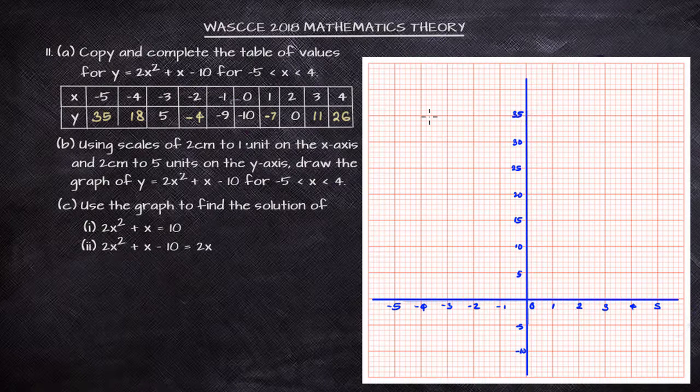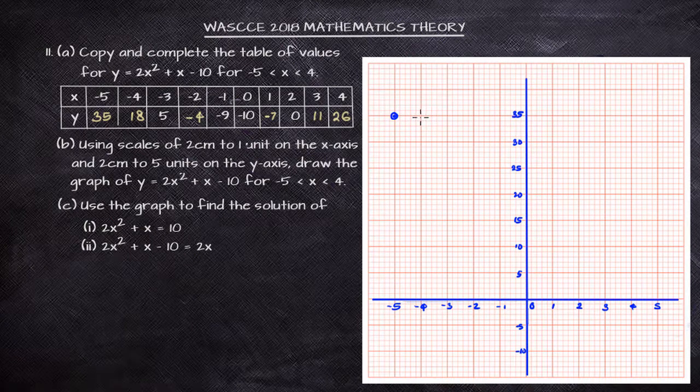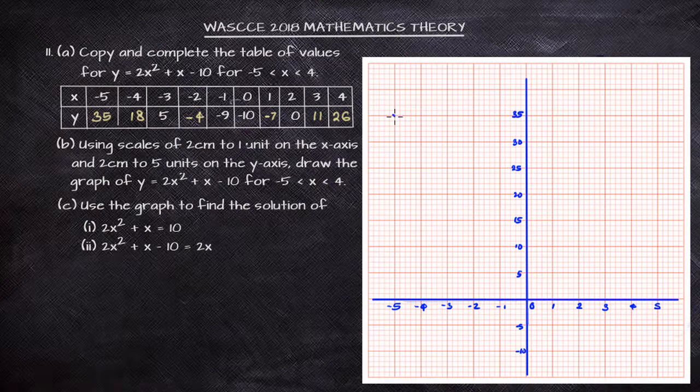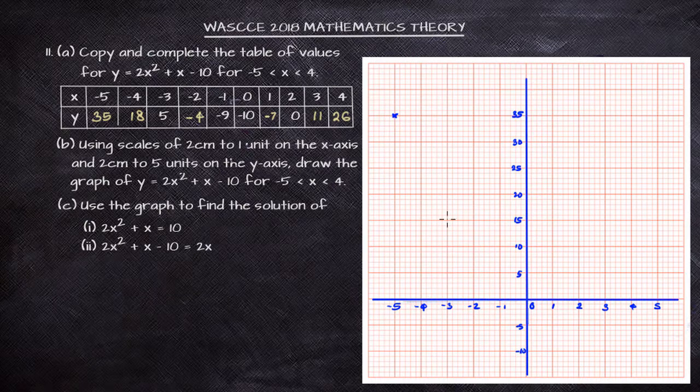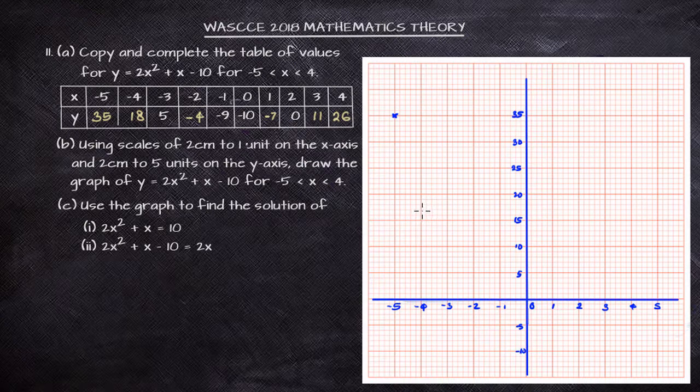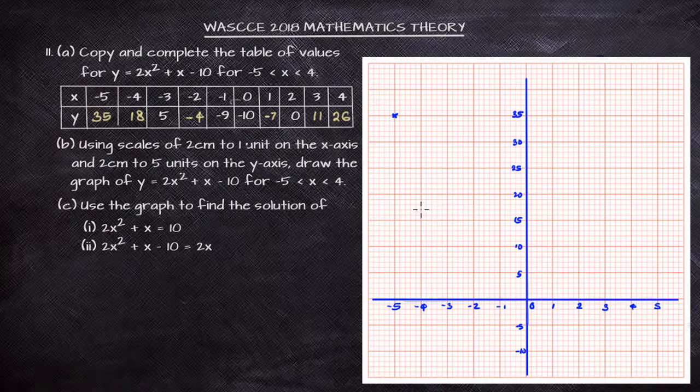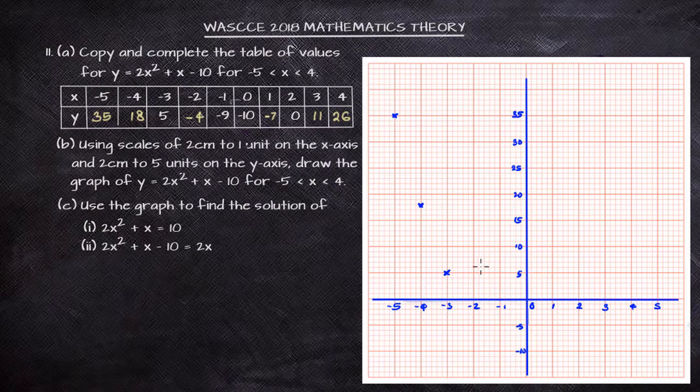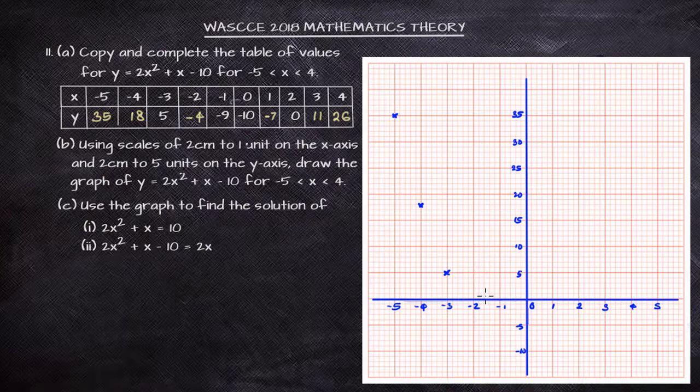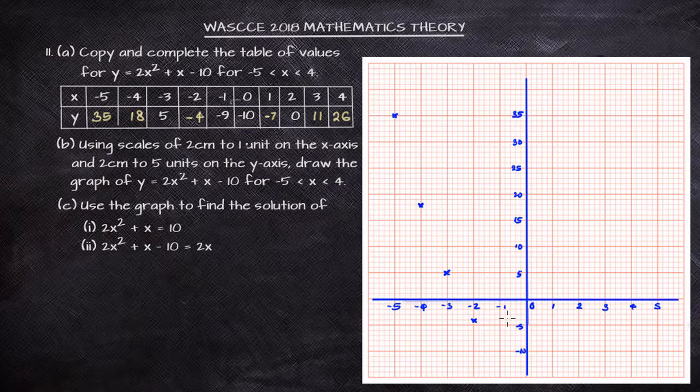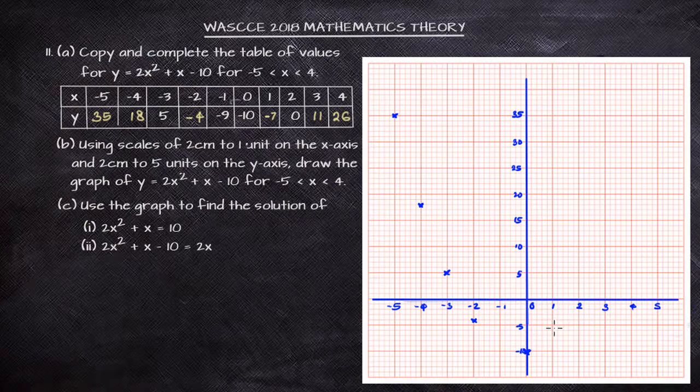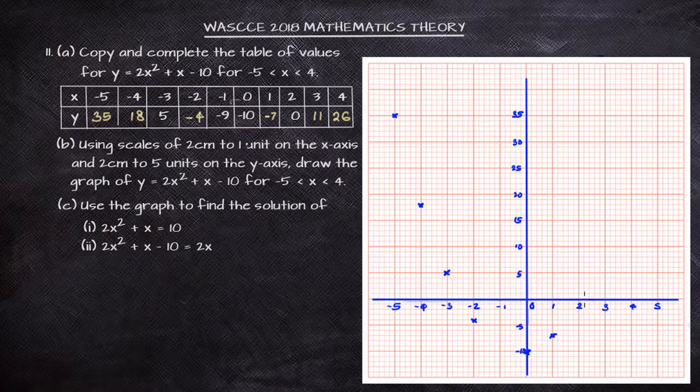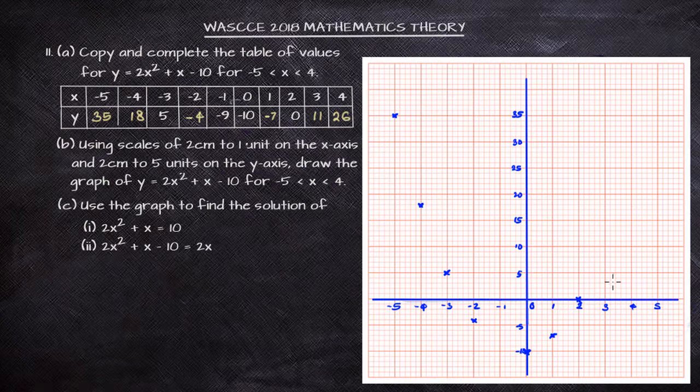Now, having done that, I want to look at each corresponding values of x and y. When x is minus 5, y is 35. So at that point, I want to use the cross. So x is minus 5, y is 35. When x is minus 4, y is 18. I have 15, 16, 17, 18. When x is minus 3, y is 5. When x is minus 2, y is minus 4. When x is minus 1, y is minus 9. 0 and minus 10. 1 and minus 7. 2 and 0. 3 and 11. 4 and 26. Alright.